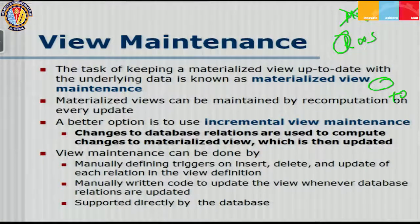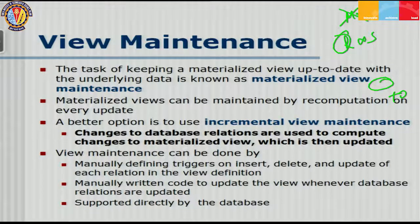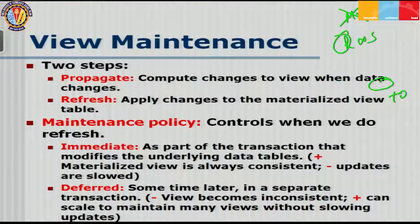View maintenance can be done by manually defining triggers on insert, delete, and update of each relation in the view definition; by manually written code to update the view whenever database relations are updated; or directly by databases, where once you define a materialized view, there are default strategies to maintain it. This is actually done in two steps: first, propagate — compute changes to the view when data changes — and then apply those changes.